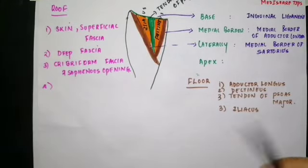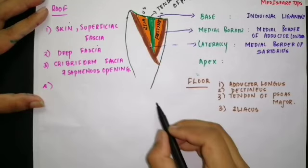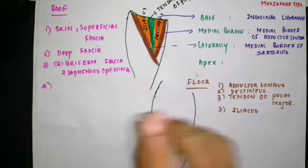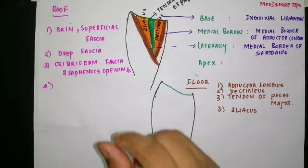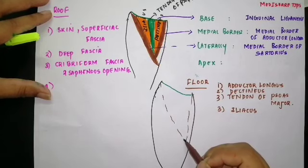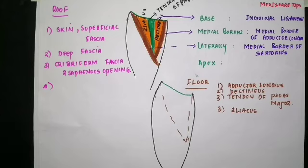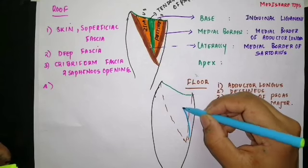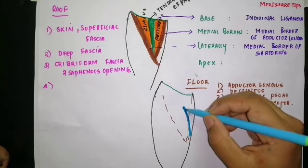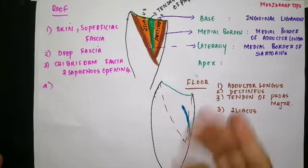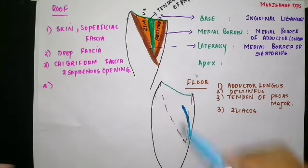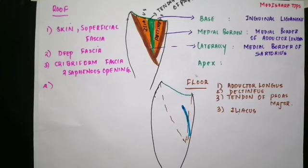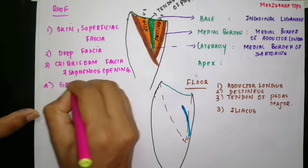The great saphenous vein passes medially through the lower limb, ascends upwards, and enters through the saphenous opening to join the femoral vein. The saphenous vein is at first superficial to the femoral triangle, then passes through the saphenous opening to open into the femoral vein. Therefore, the great saphenous vein also forms the roof of this triangle.